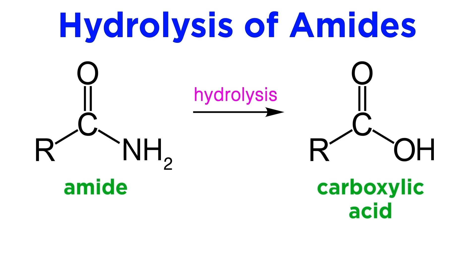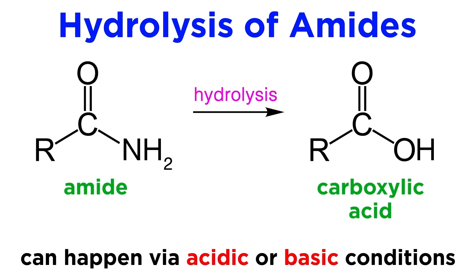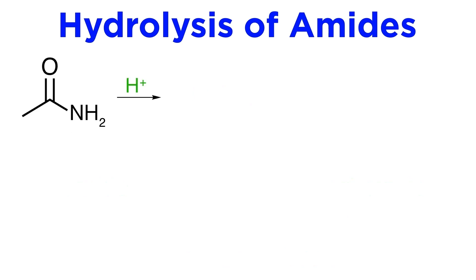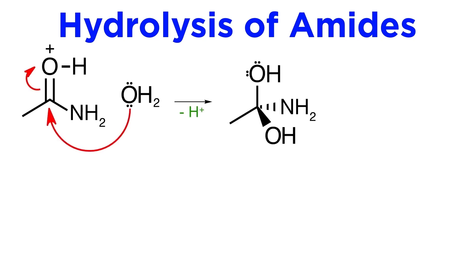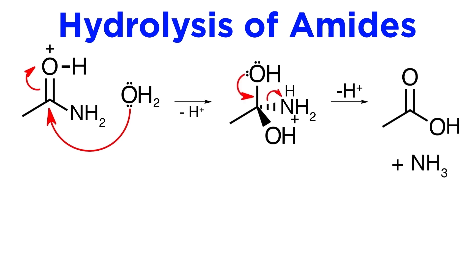In terms of reactivity, amides can easily be converted back into carboxylic acids via hydrolysis. This can be done in either acidic or basic conditions. If acidic, the carbonyl is protonated, then water attacks, then NH2 is protonated, the carbonyl reforms, and ammonia is kicked off, leaving us with a carboxylic acid.